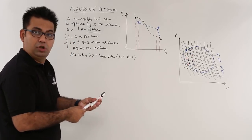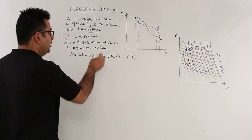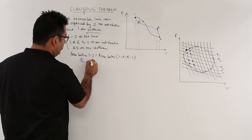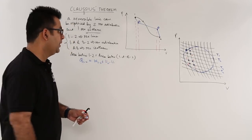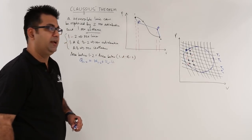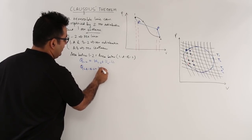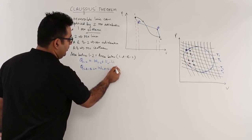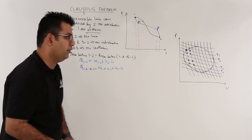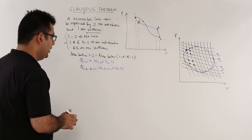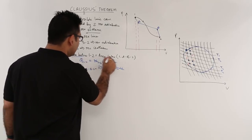If we apply the first law to the original reversible process, we get Q₁₂ = W₁₂ + (U₂ − U₁). Applying the first law to the three replacement lines gives Q₁AB₂ = W₁AB₂ + (U₂ − U₁). The internal energy terms cancel because energy is a point function, and the work terms cancel because the areas are equal.